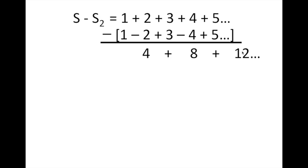If we factor out a 4, it's going to give us 4 and then the string of the numbers here. So 4 divided by 4 is 1, 8 divided by 4 is 2, 12 divided by 4 is 3, and so on. If you remember correctly, this string of numbers inside the parentheses is equal to our original S equation. So basically, S minus S2 gives us 4S.